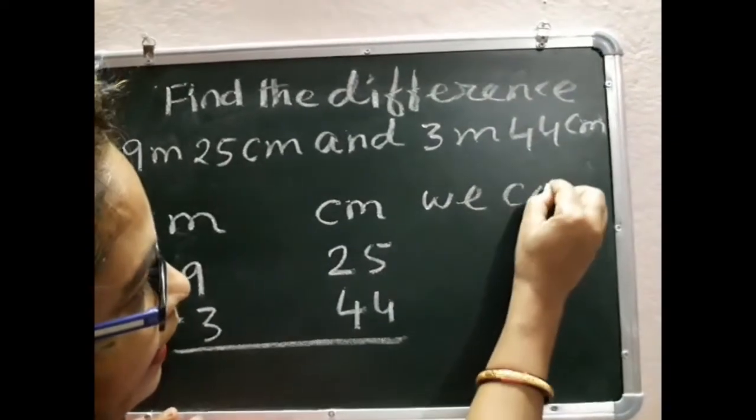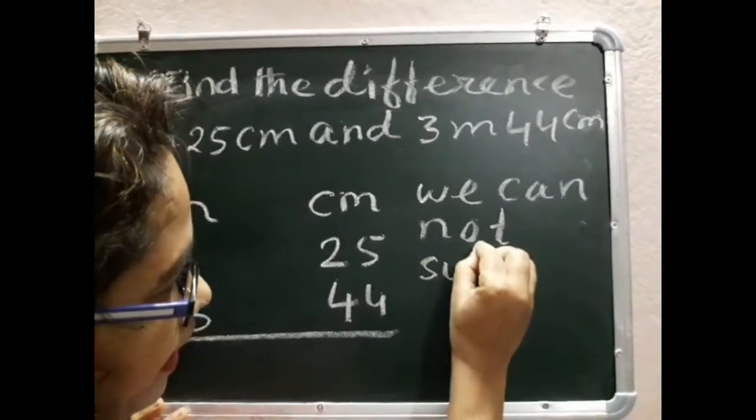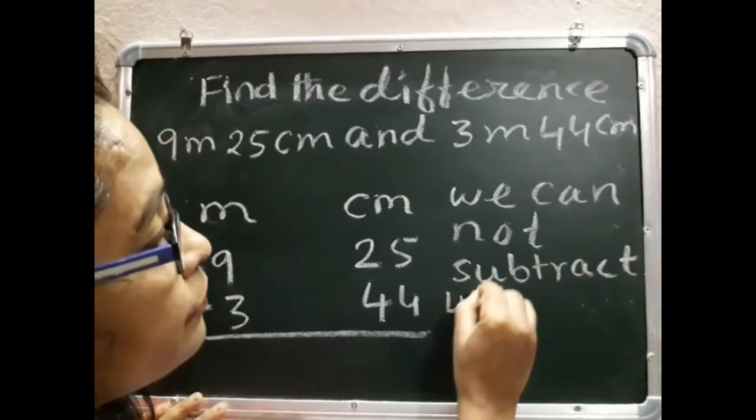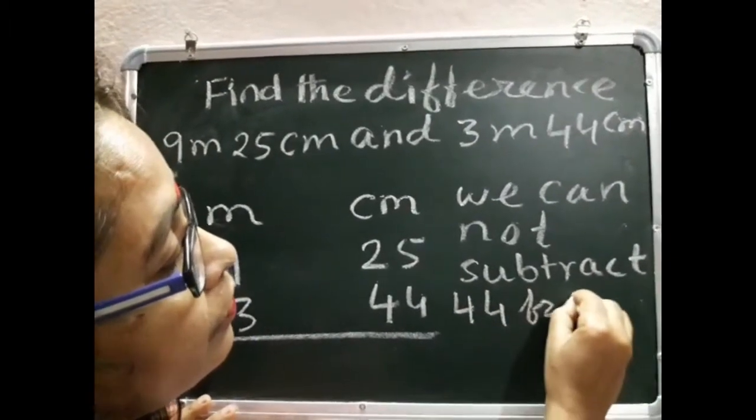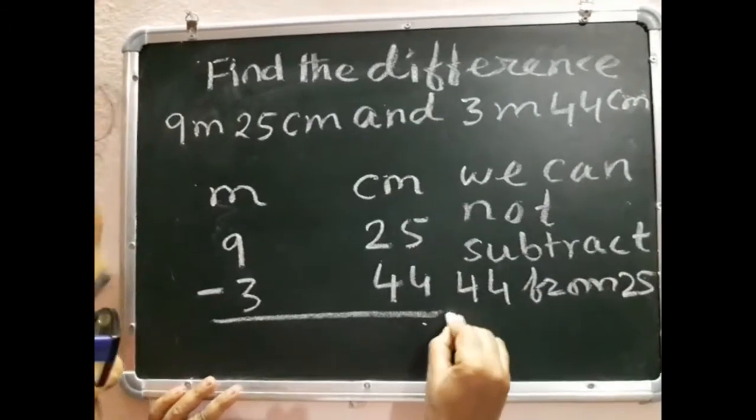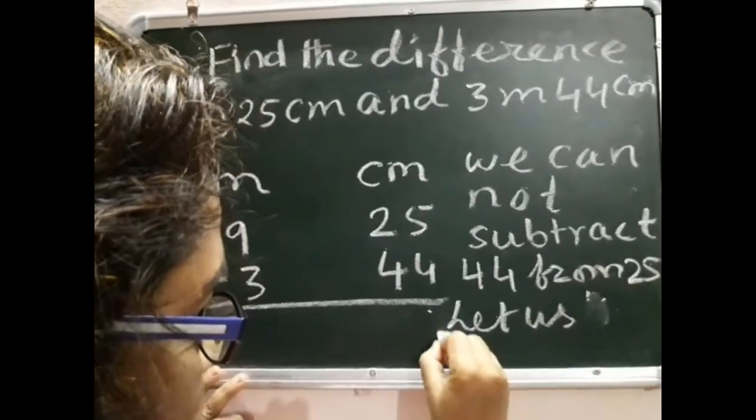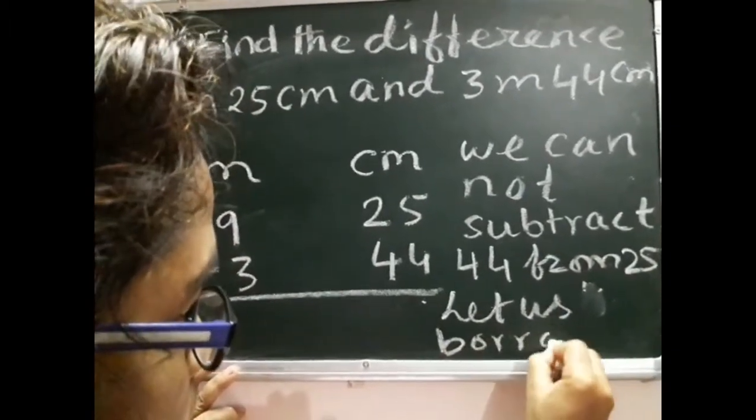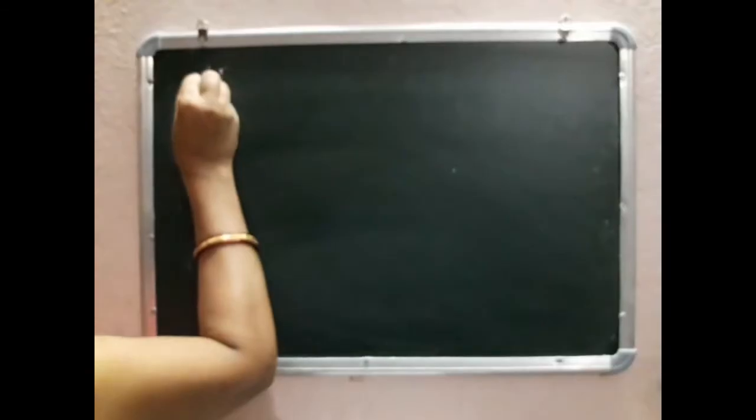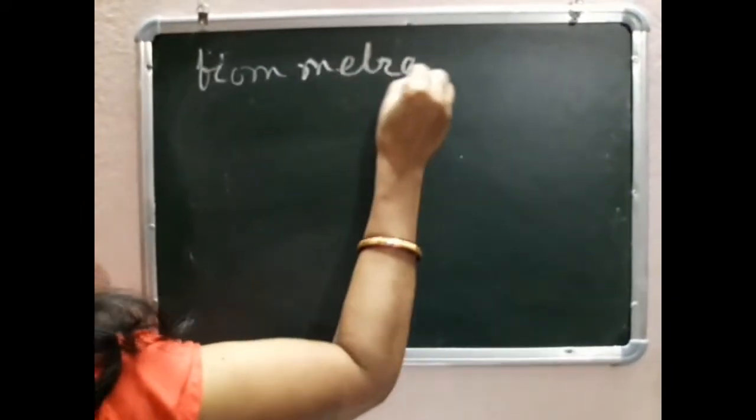We cannot subtract 44 from 25, so let us borrow one meter from the meter column.